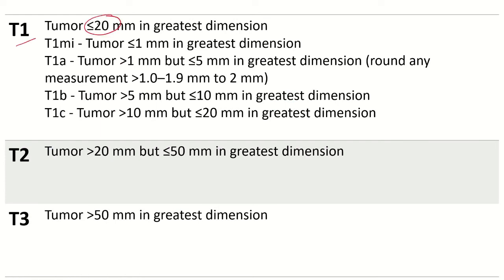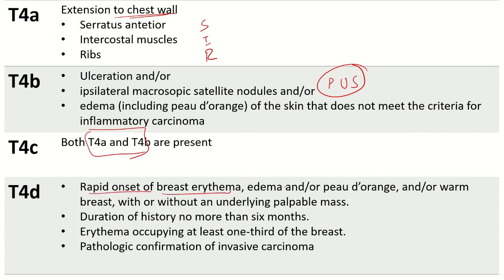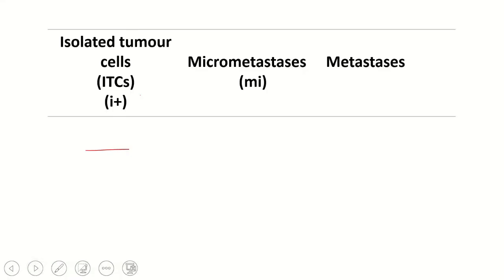Let's see the theory part. T1 is less than or equal to 2 centimeters, T2 is 2 to 5 centimeters - if the tumor is 5 centimeters without any involvement of skin then it is considered as T2. T3 is more than 5 centimeters. T4a is involvement of chest wall that is SIR, 4b is involvement of skin which is US, 4c is 4a plus 4b, 4d is rapid onset of breast erythema evolving over a duration of less than six months and it is occupying at least one third of the breast and there should be pathological confirmation of invasive carcinoma.